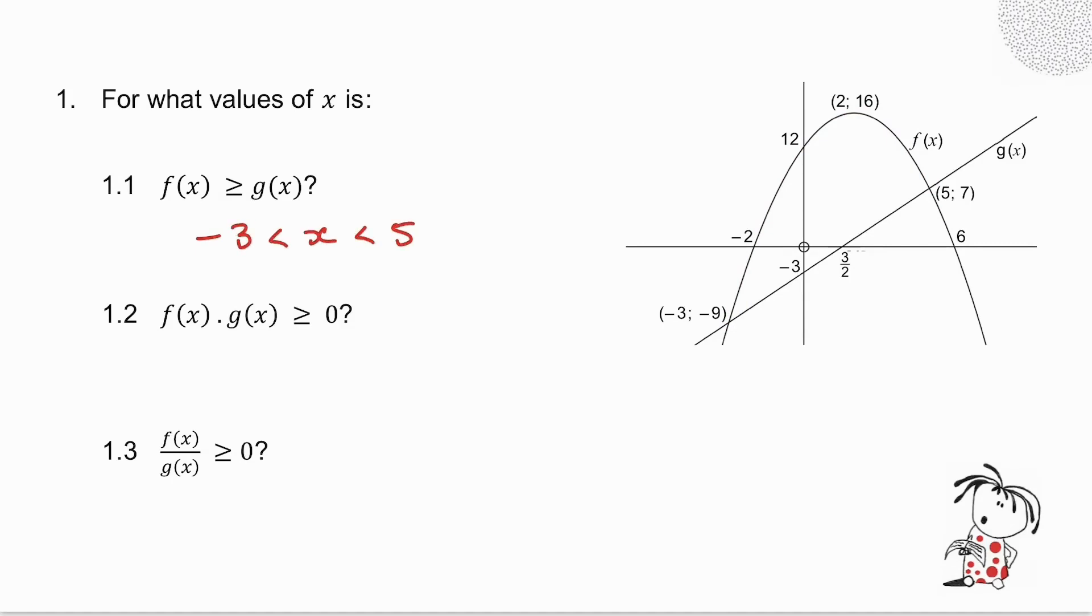Let's have a look at the endpoints. At minus 3, the two graphs are equal, which is fine because I want where f(x) is greater than or equal to g(x). At 5, the two graphs are equal. Again, it's fine. So I can include both the minus 3 and the 5.